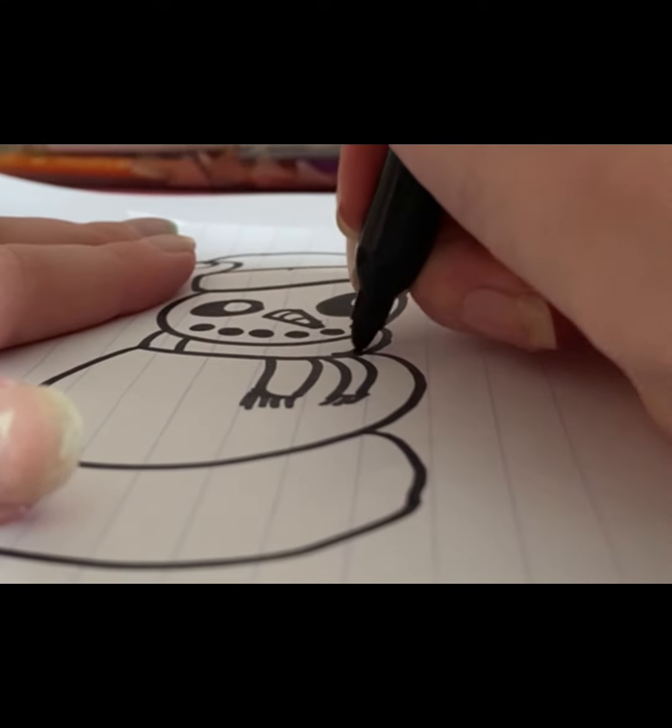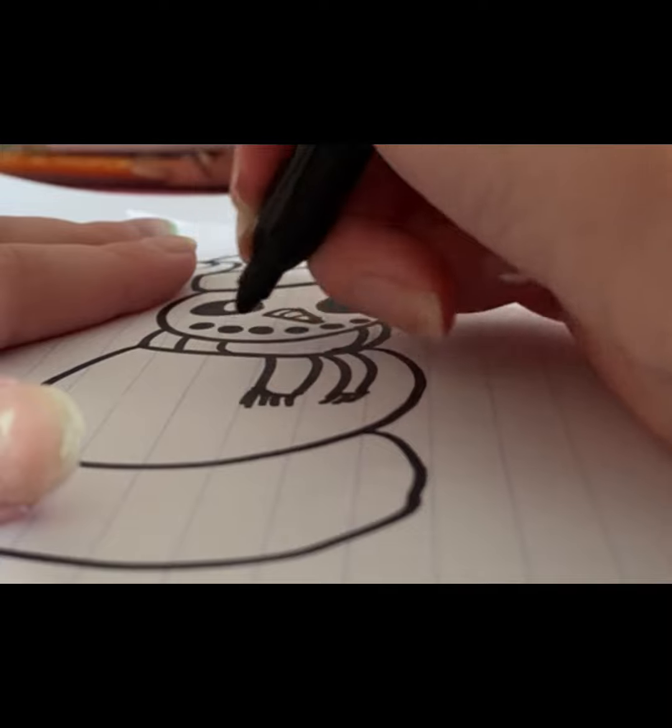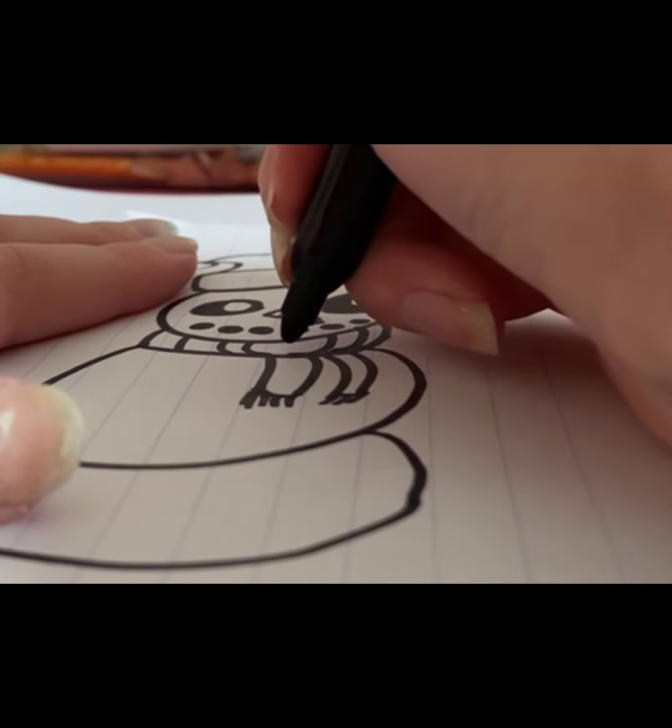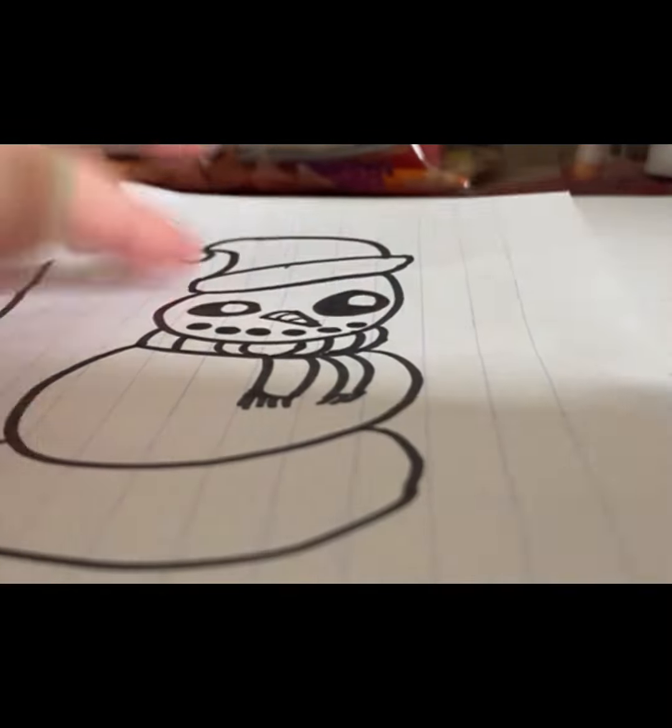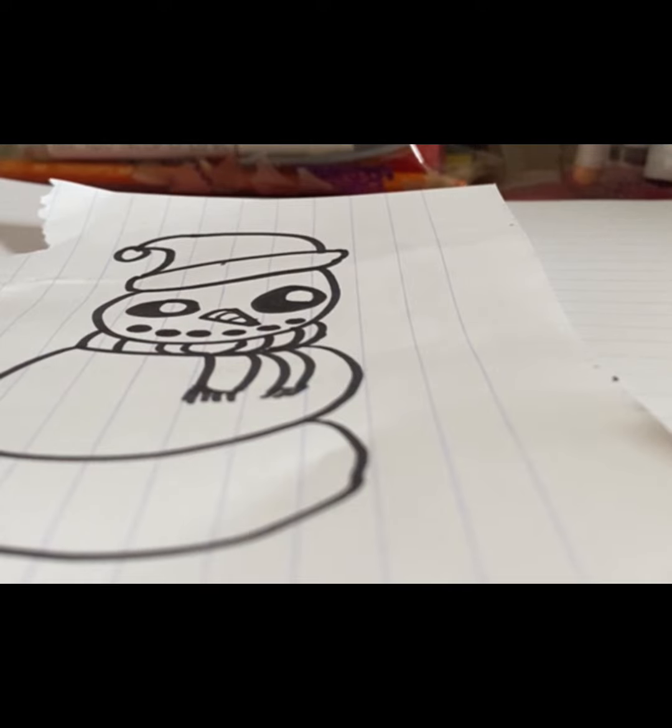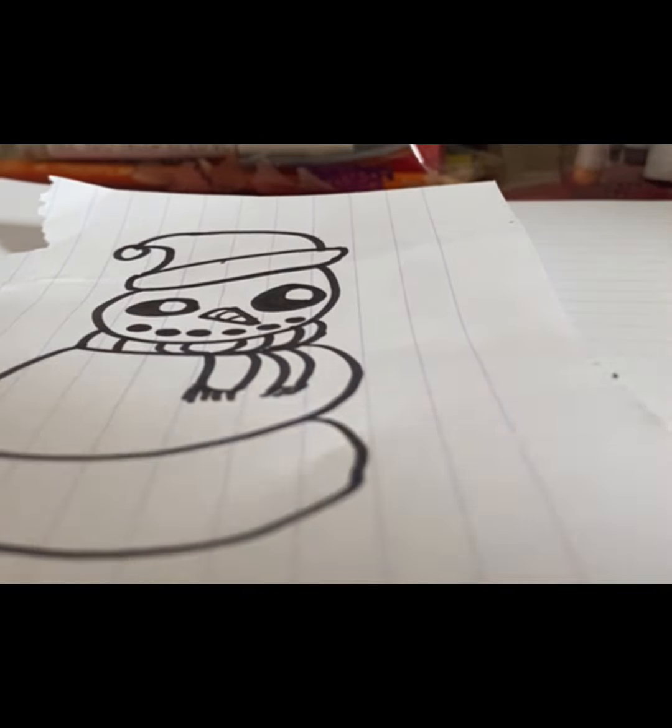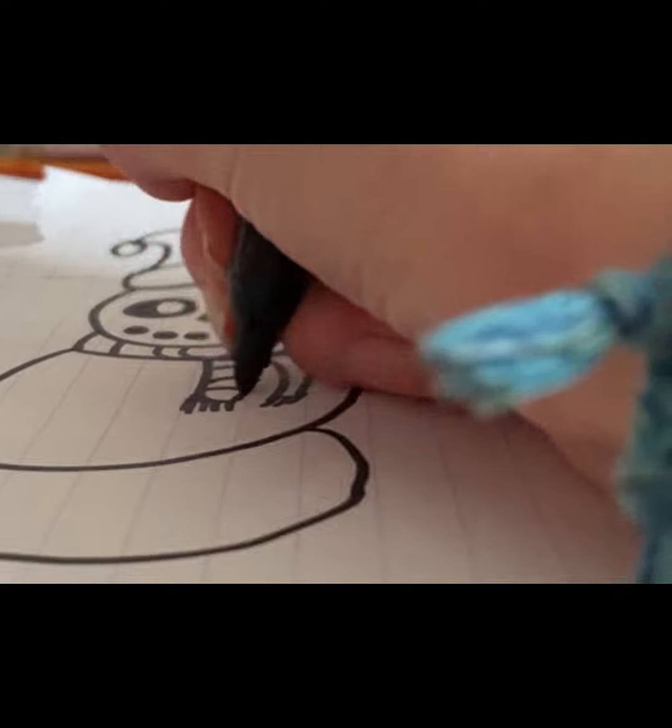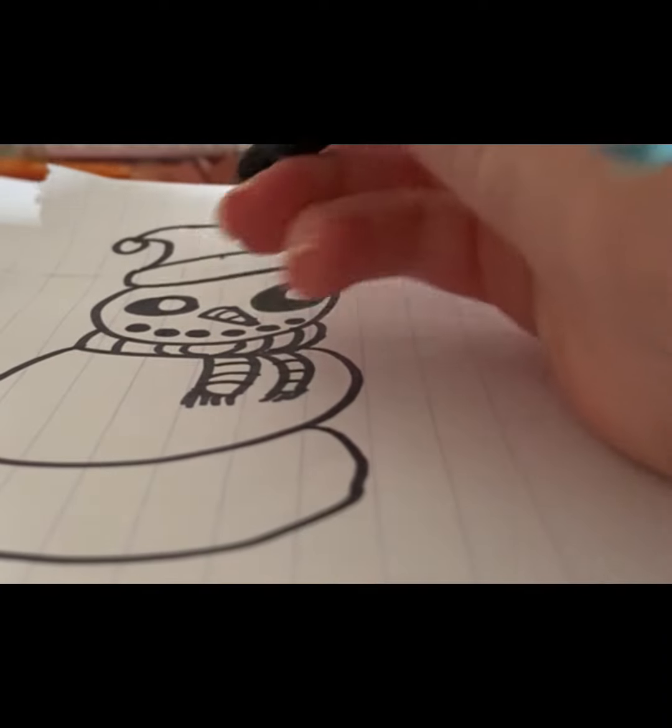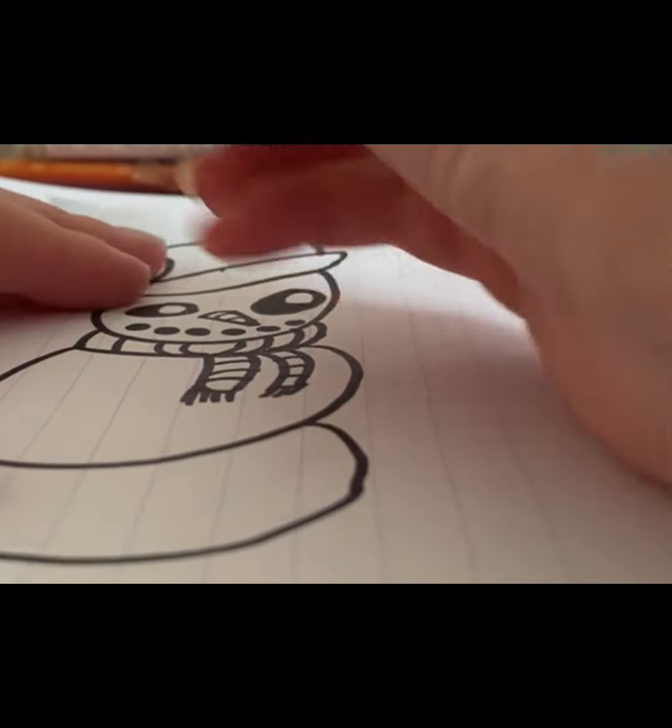Then do some curved, like rounded sort of lines for the scarf. And make sure that they're both going separate ways. Like they're both kind of curving outwards. And then they meet up in the middle.